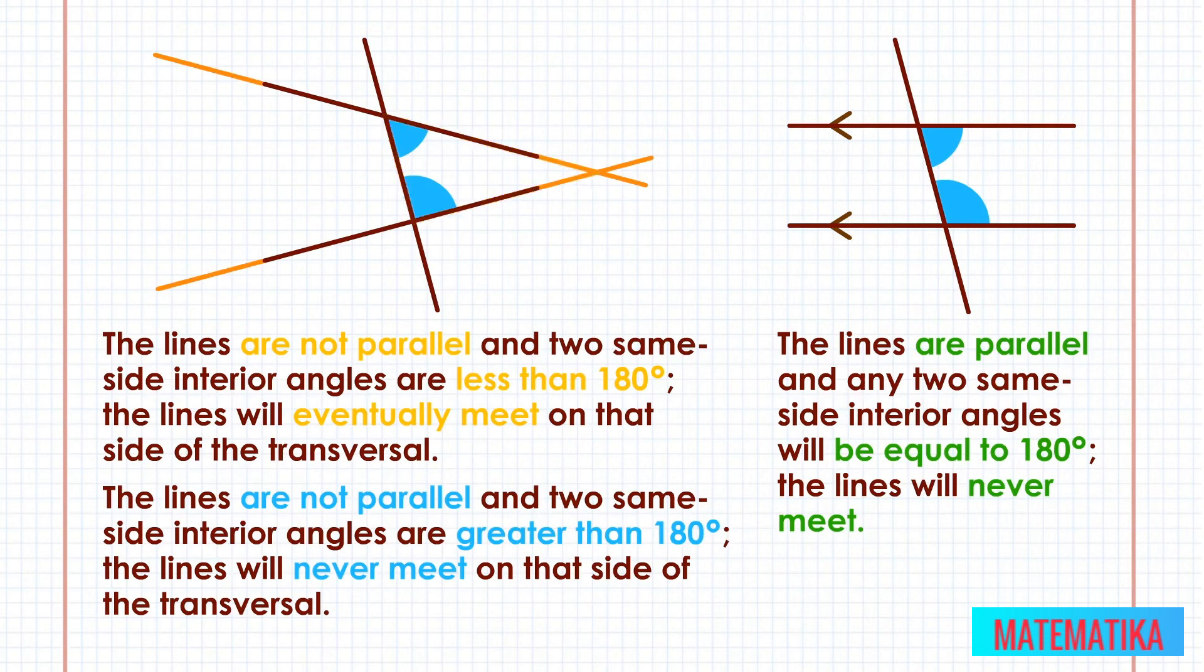If you hop over the transversal that created two interior angles less than 180 degrees, the other two same side interior angles will always be greater than 180 degrees.